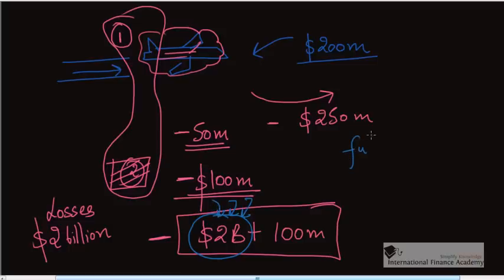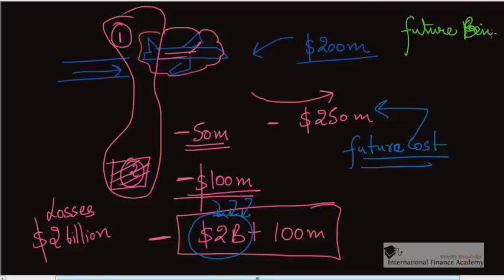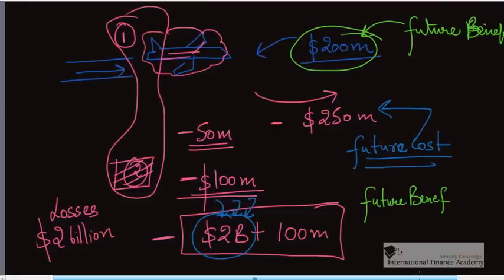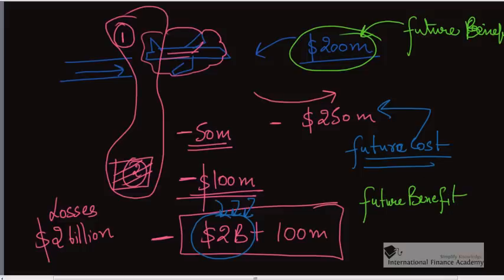You only look at the future cost and future benefit. Everyone likes cash coming in. So future benefit, that's the price at which it will be sold. Only when the future benefit is greater than future cost should you continue with your operation. You should continue taking that decision of manufacturing planes, and otherwise you should stop. You should not look at sunk cost in your decision making.